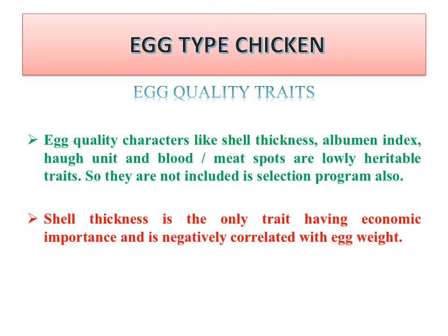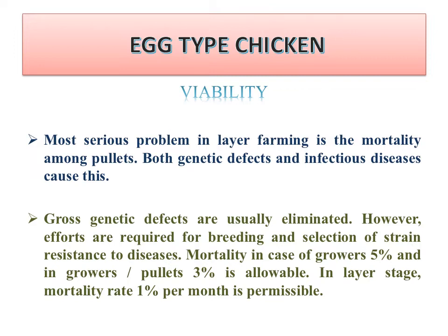Egg quality characters such as shell thickness, albumen index, Haugh unit, blood and meat spots are lowly heritable traits, so they are not included in the selection program. Shell thickness is the only trait having economical importance and is negatively correlated with body weight or egg weight. If egg weight is higher, shell thickness is lower and the chances of spoilage are higher. This is why medium egg size is preferable — it provides proper shell thickness and increases shelf life.